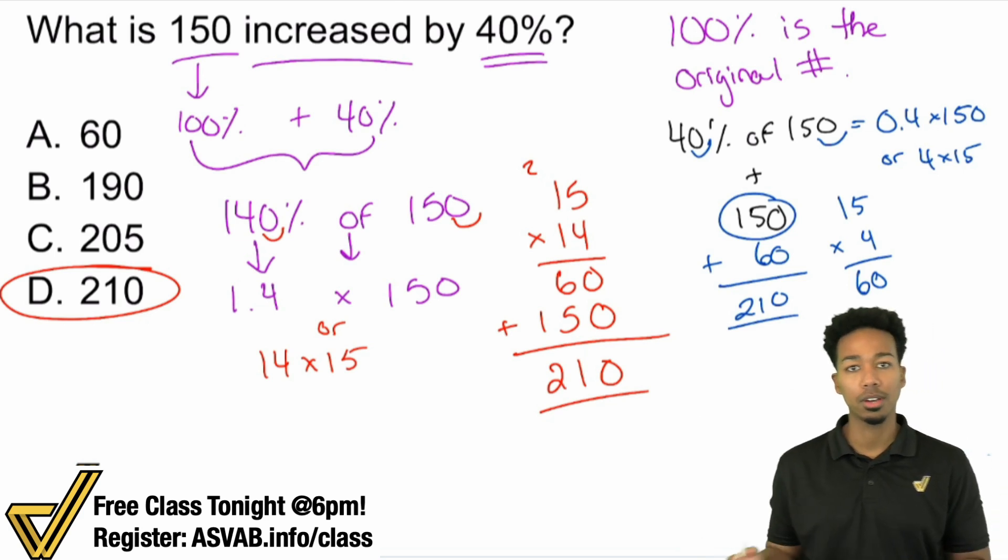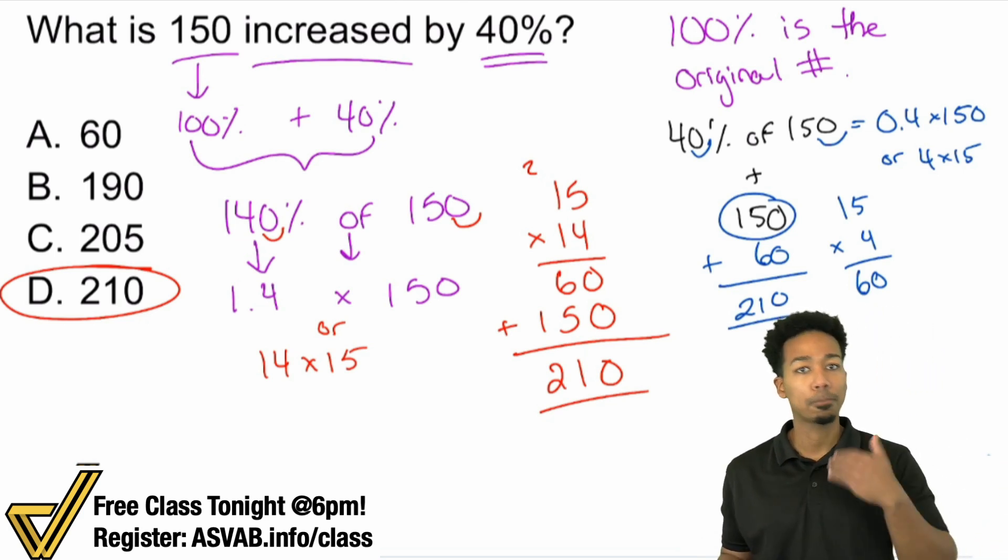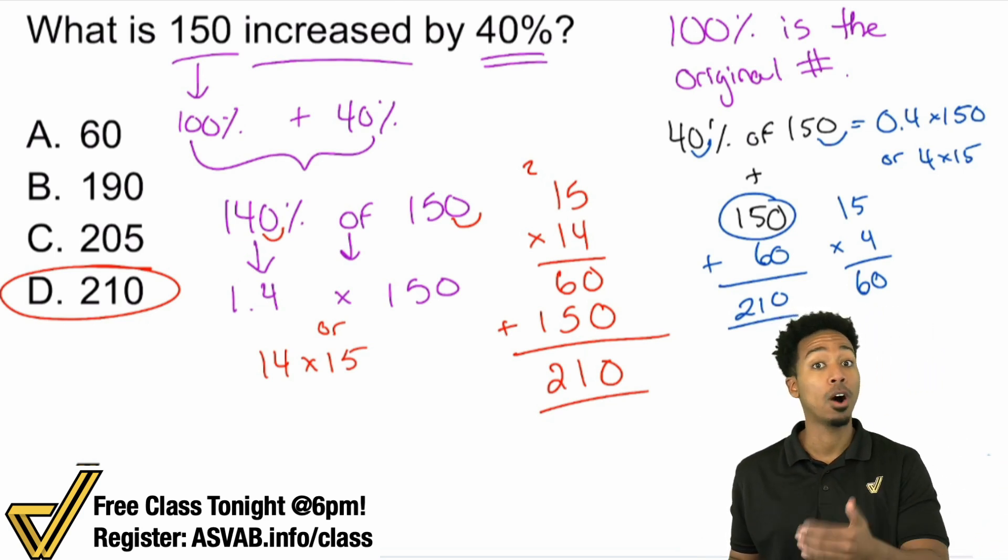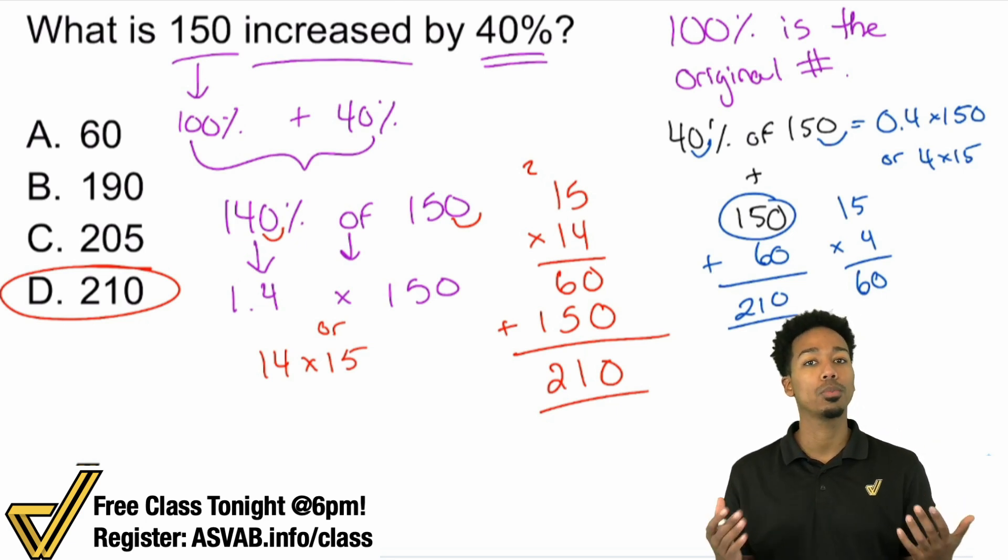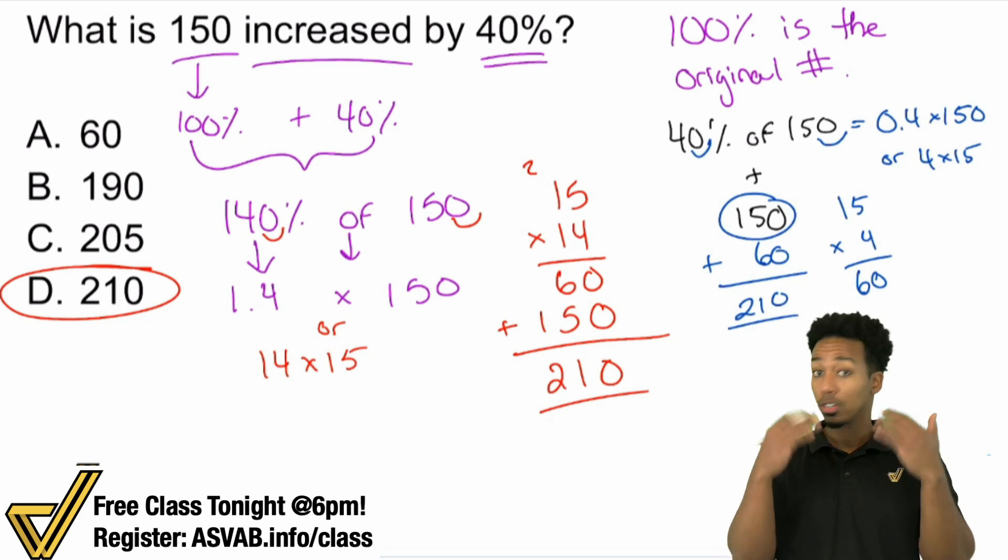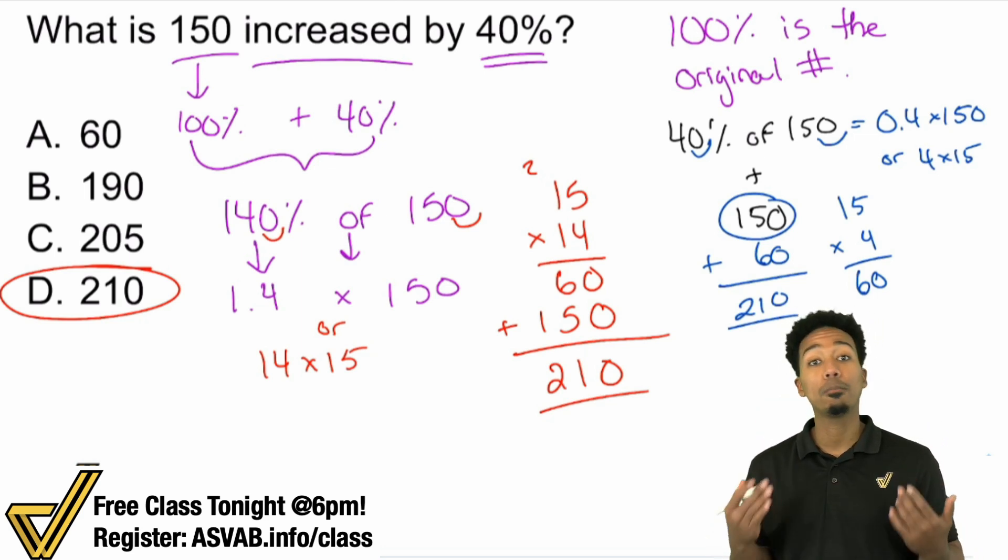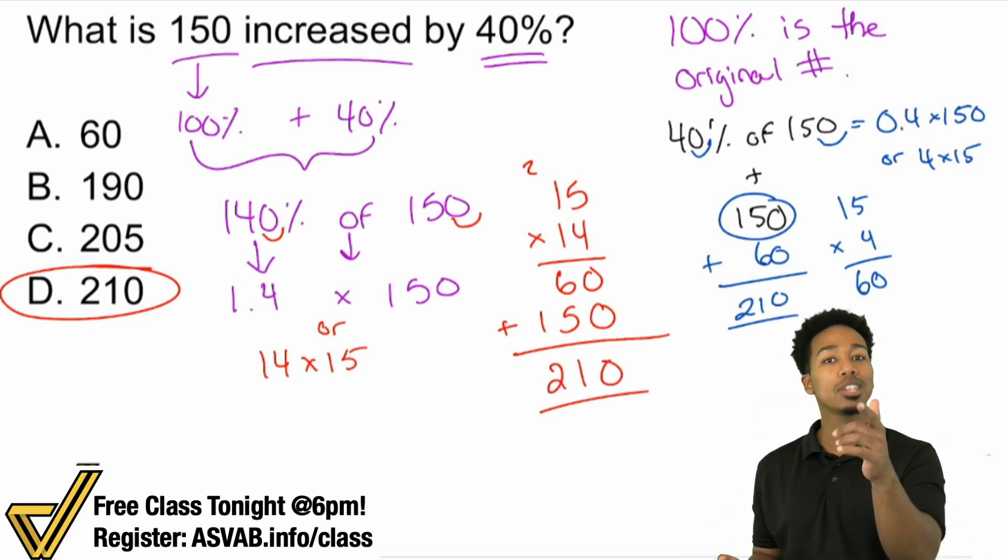But you have to ask yourself, am I prepared to pick the fastest method for myself on test day? If you only know one way, then the answer is no, you're not prepared. But if you know it more than one way, understanding that percent increases and decreases are all based off of 100%, you give yourself that better shot.